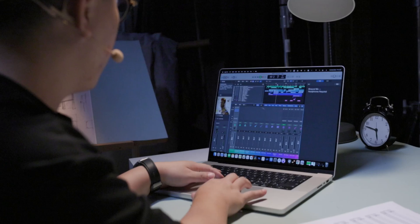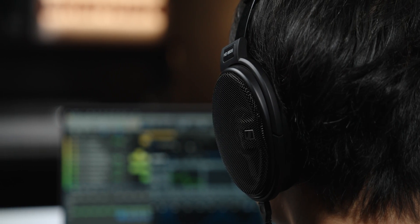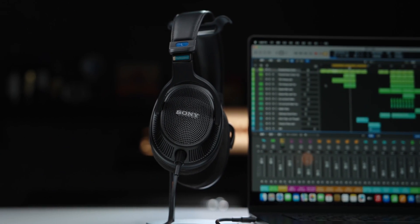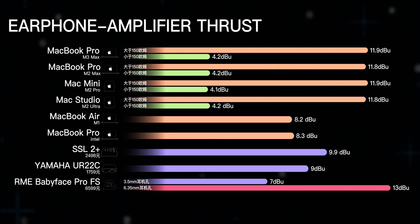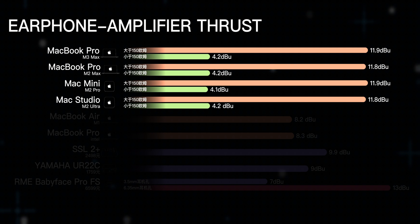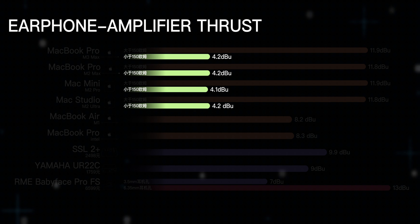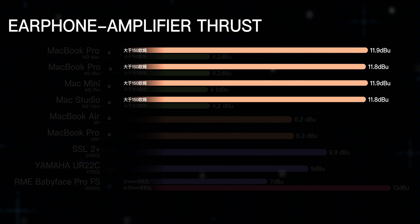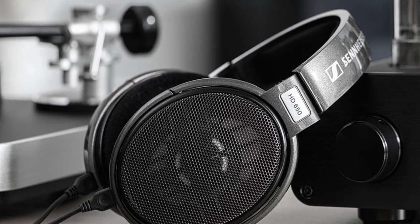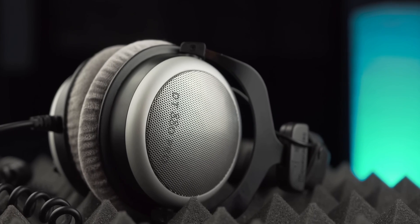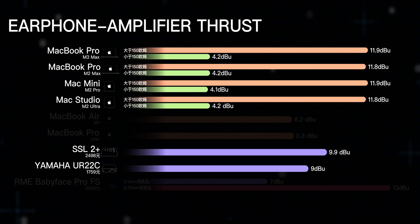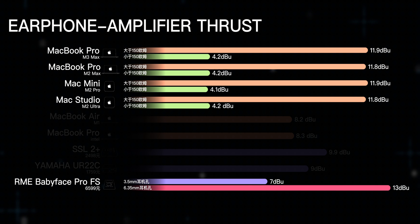Since Apple launched the MacBook Pro with M1 Max core in 2021, Mac's playback quality and headphone amplifier output have been improved, and Apple's output adapts according to the impedance of the connected headphones. When connected to 150 ohms, the push is about 4.2 dB. When connected to higher impedance, the push is close to 12 dB. This can already drive headphones like the Sennheiser HD650 at 300 ohms, and even 600 ohm machines like the DT880. This push surpasses the SSL 2 Plus and Yamaha UR22C's headphone output, and is close to the RME Babyface Pro FS. With this adaptive push function, low-impedance headphones don't require boosting the volume and sacrificing dynamic range.